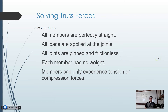We make a few key assumptions when doing this math: all members are perfectly straight; all loads are applied at the joints, not on the members; all joints are pinned and frictionless, meaning they freely rotate with no other forces; each member has no weight; and members can only experience tension or compression — no twisting or torsional forces in the Z direction.